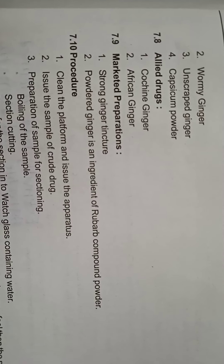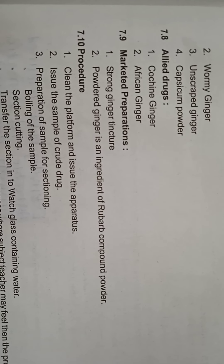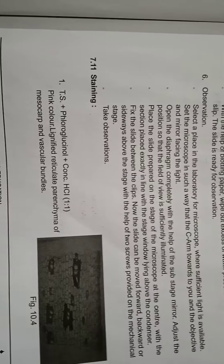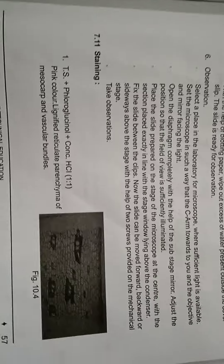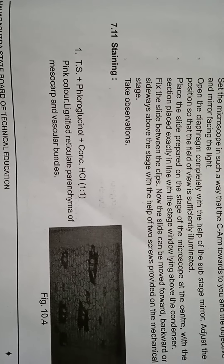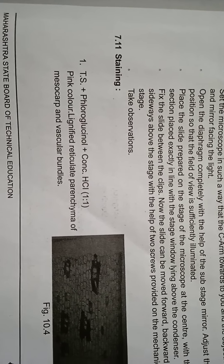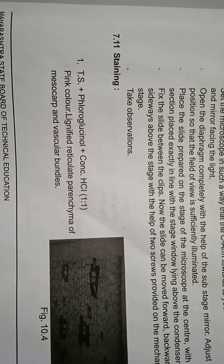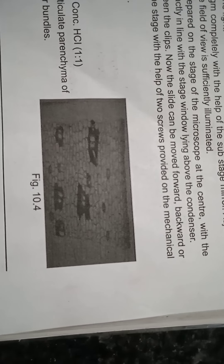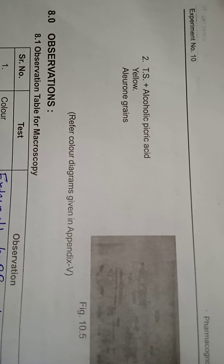Marketed preparations of ginger include strong ginger tincture; powdered ginger is an ingredient of rhubarb compound powder. The procedure for taking the transverse section uses fluoroglucinol plus HCl in 1:1 proportion as the staining agent. This gives pink color to the lignified reticulate parenchyma of the mesocarp and vascular bundles. The second staining agent is alcoholic picric acid, which gives yellow color to the aleurone grains.